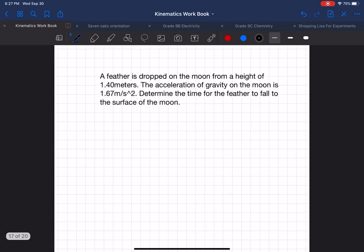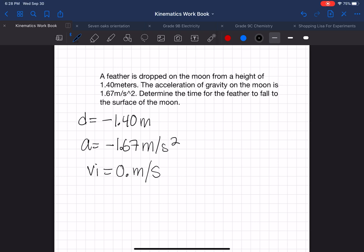Next question: a feather is dropped on the moon from a height of 1.4 meters. The acceleration of gravity on the moon is 1.67 meters per second squared. Determine the time for the feather to fall to the surface of the moon. So again, write down all the variables that you are given. So distance is 1.4, but we should note that distance is actually negative, so negative 1.4 meters because it's dropping down. Acceleration is negative 1.67 meters per second squared, and then vi is 0.0 meters per second, so it's starting at a height at initial velocity or initial speed of zero.